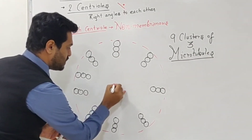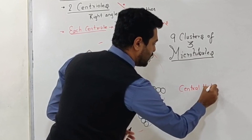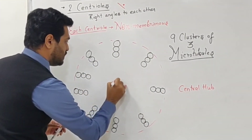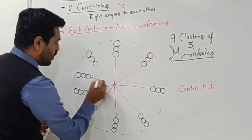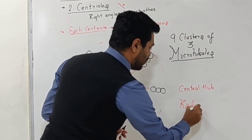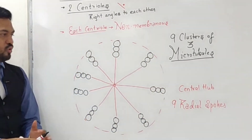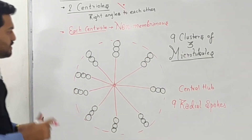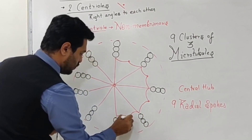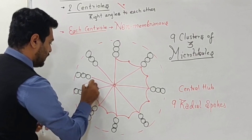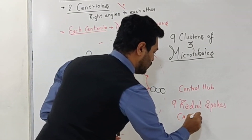All these microtubules are attached to a central part called the central hub, which is a proteinaceous structure. From the central hub, structures radiate outward which are known as radial spokes. There are 9 radial spokes going towards the 9 clusters of microtubules. At the center, the overall appearance of the radial spokes is like a cartwheel, so the 9 radial spokes show a cartwheel appearance.